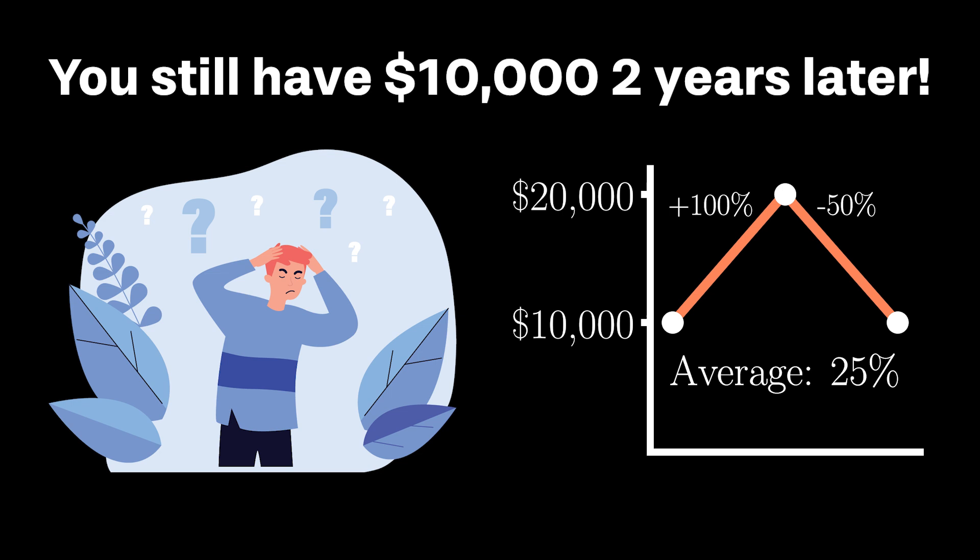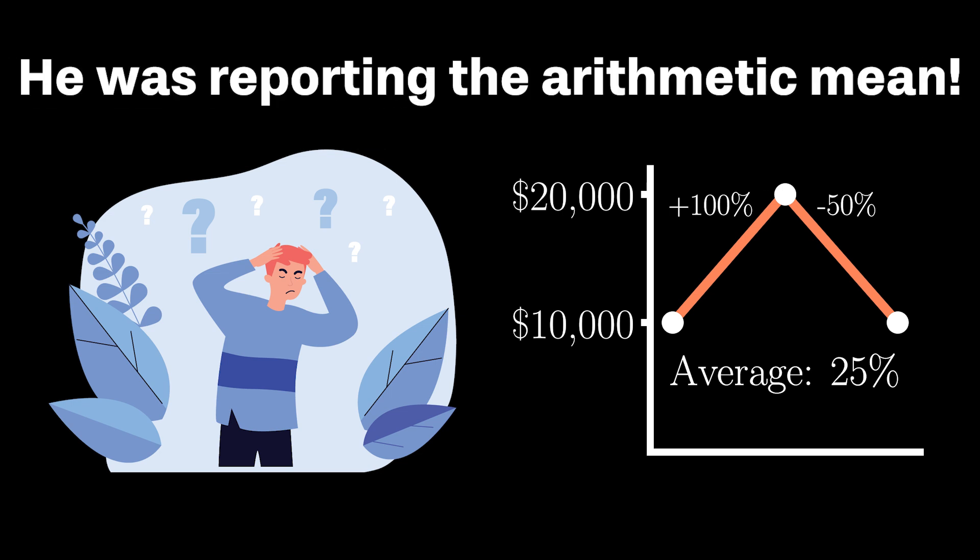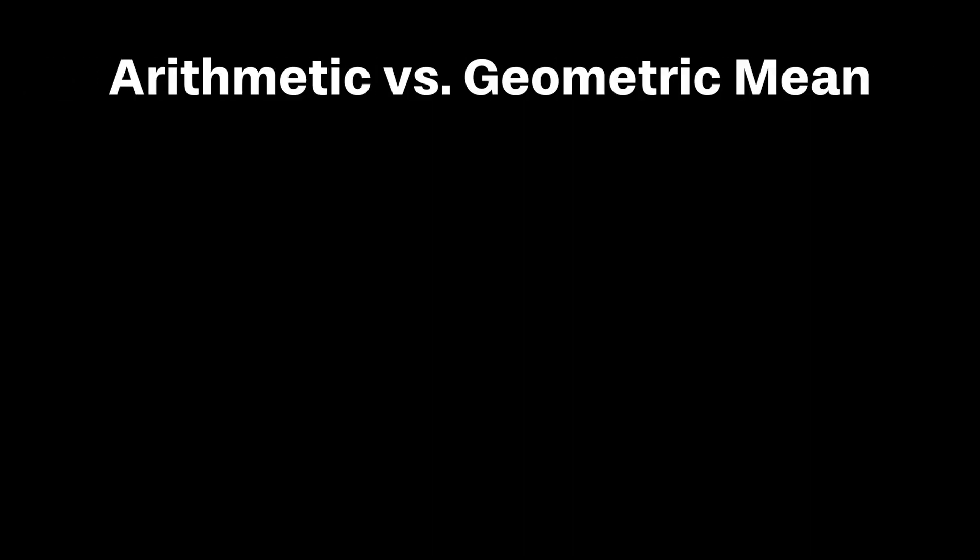The short answer is that Frank was missing an important adjective in his statement. He was reporting to you the arithmetic mean, the mean that we all learn about in school. But there are other types of means, and perhaps the most relevant in the world of finance and investments is the geometric mean. So let's discuss why that is the case.